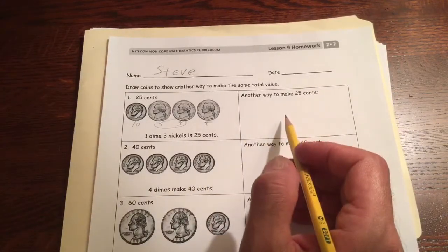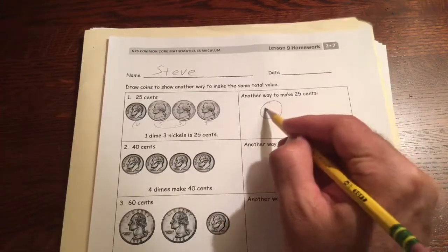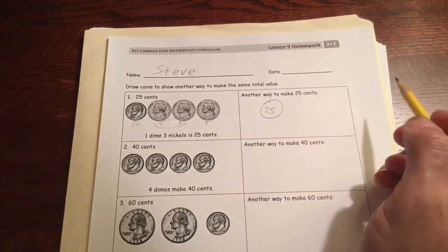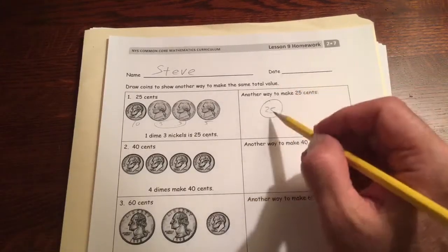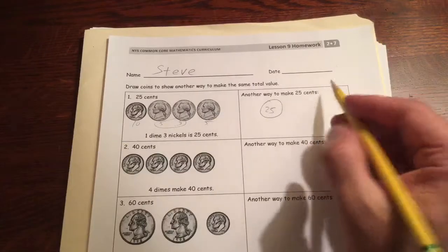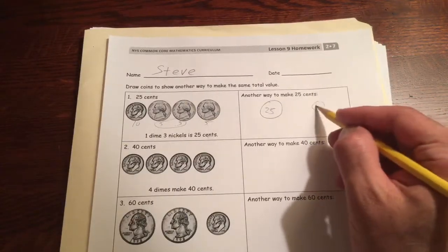Another way to make 25 cents is probably the easiest way to do it. You could also draw, and you could be done right there. You could also do it with two dimes and a nickel, and you would draw those.